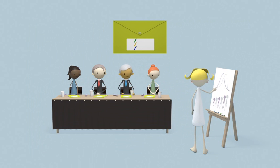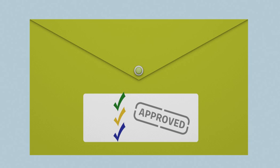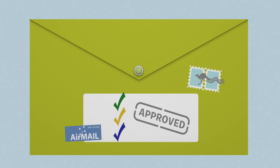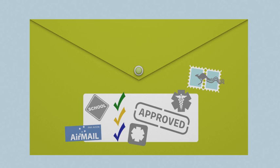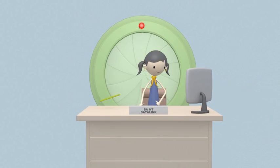Next, our researcher seeks ethics approval. Satisfied that her research is ethical and will benefit the community without breaching the privacy of others, she is granted permission to proceed. The custodians from the participating organisations are notified of her ethics approval and give their final sign-off on the application. Data Link is also notified and, having received this final go-ahead, the process of linking the data for this research project is initiated.